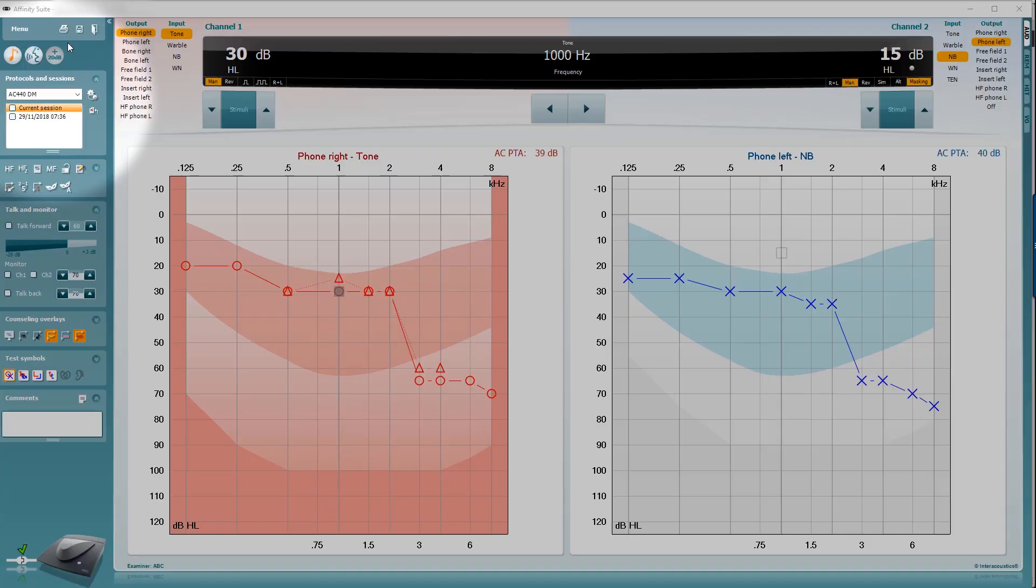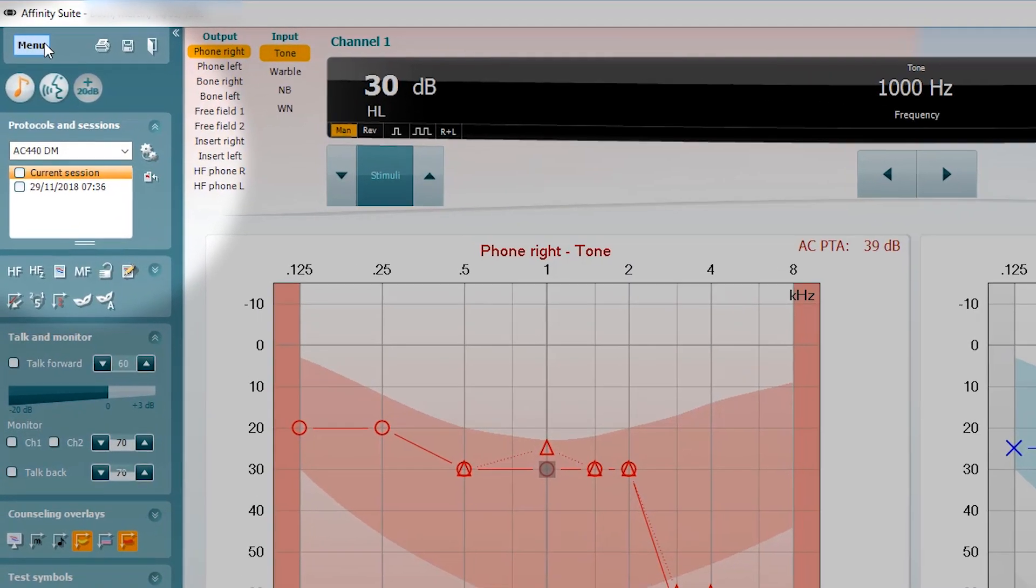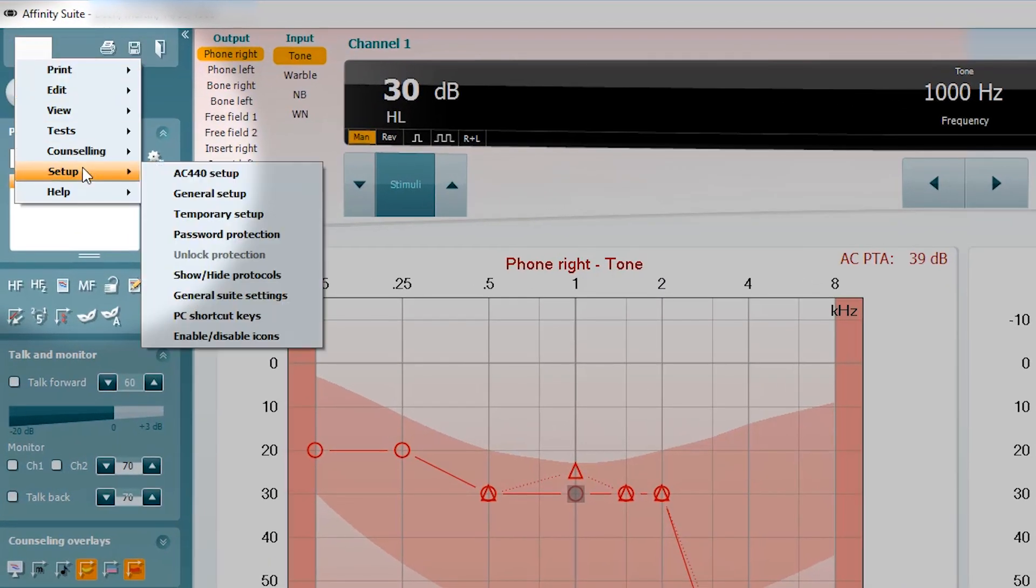So let's have a quick look at that now, and I can show you how to access this in the software. First of all, you need to click on Menu, Setup, and then Enable and Disable Icons.